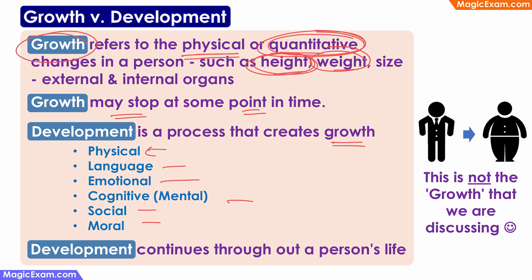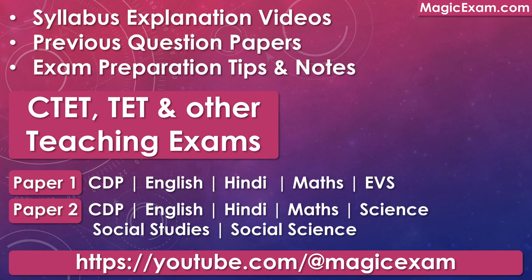Development continues throughout a person's life. While the height of a person might stop increasing after a particular age, the person continues to develop in other aspects throughout his or her life. For example, the person's language might keep on increasing, and social skills or moral development may keep on happening till the person is alive. Therefore, development continues throughout the person's life.